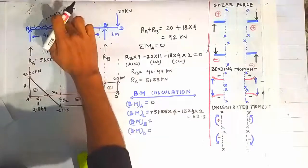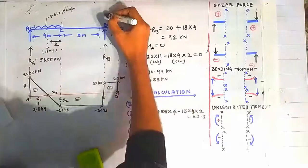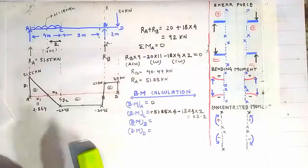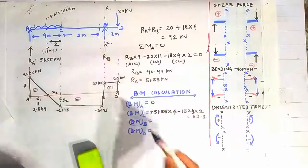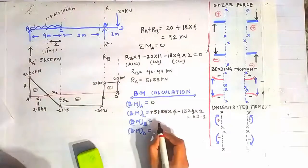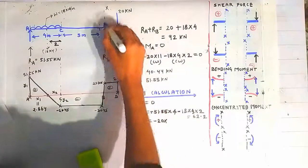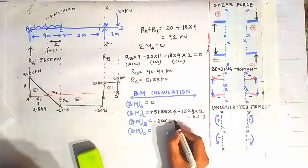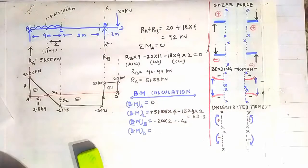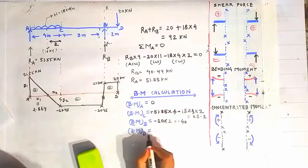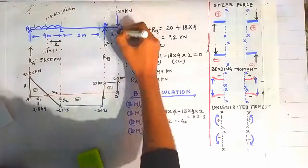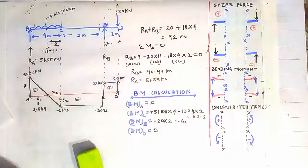For bending moment at B, construct a section at B and look at the right side to minimize calculation. The 20 kN point load at D creates a negative bending moment of 20 into 2 meters, giving minus 40 kNm. Bending moment at D is zero, because there is nothing on the right side of the section through D.